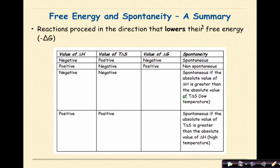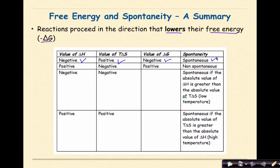Free energy and spontaneity — a summary. Reactions proceed in the direction that lowers their free energy; in other words, we're looking for a negative change in free energy. If your value of delta H is negative and your value of T delta S is positive, ultimately your delta G is going to be negative and the reaction will be spontaneous. If your delta H is positive but your T delta S is negative, the value of delta G will be positive and therefore the reaction will be non-spontaneous.